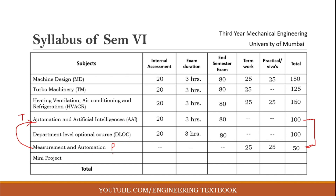Lastly, the Mini Project, which is common for all semesters. Because it is project-based, it does not have internal assessment, exam duration, or end semester examination. It only has term work and practical of 25 marks each, giving a total of 50 marks for the Mini Project.